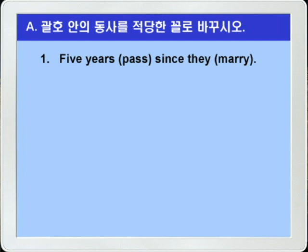자, 오늘은 63쪽 문법 연습할 차례죠. 먼저 A번을 보면 괄호 안의 동사를 적당한 걸로 바꾸는 문제입니다. 먼저 1번을 보겠습니다. 'Five years past. Since they marry.' 그들이 결혼한 이래로, 5년이 지났다. 그래서 정리를 해보면 그들이 결혼한 지 5년이 지났다.